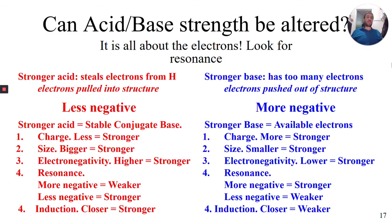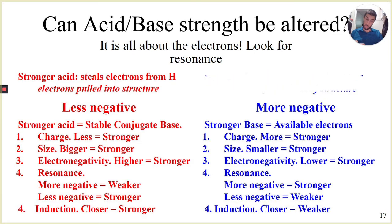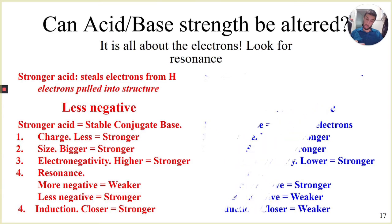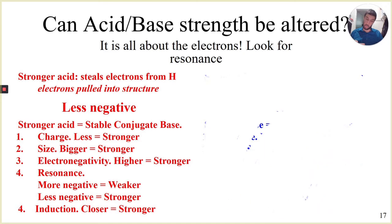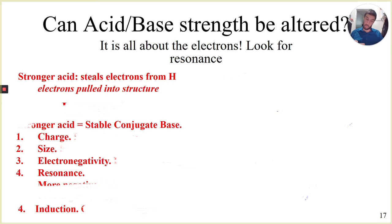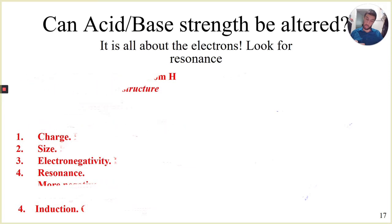Can we evaluate our acid-base strength? A lot of what we look at when evaluating acid and base strength is the same basic rules we've used in the past: charge, size, electronegativity, resonance, and induction. It is those principles that we apply to our definitions of acid and base — the same tools we've used the whole semester. All we're doing is changing our focus on how we interpret them.